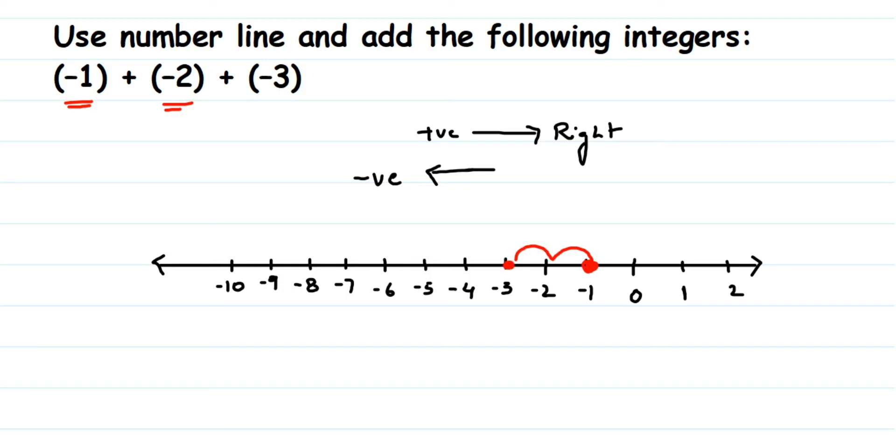And again to this I'm adding minus 3, and minus is a negative number, so we have to move towards the left side again. How many numbers we have to add? Three more numbers. So 1, 2, and 3. So I'm ending at minus 6. So answer will be minus 6.